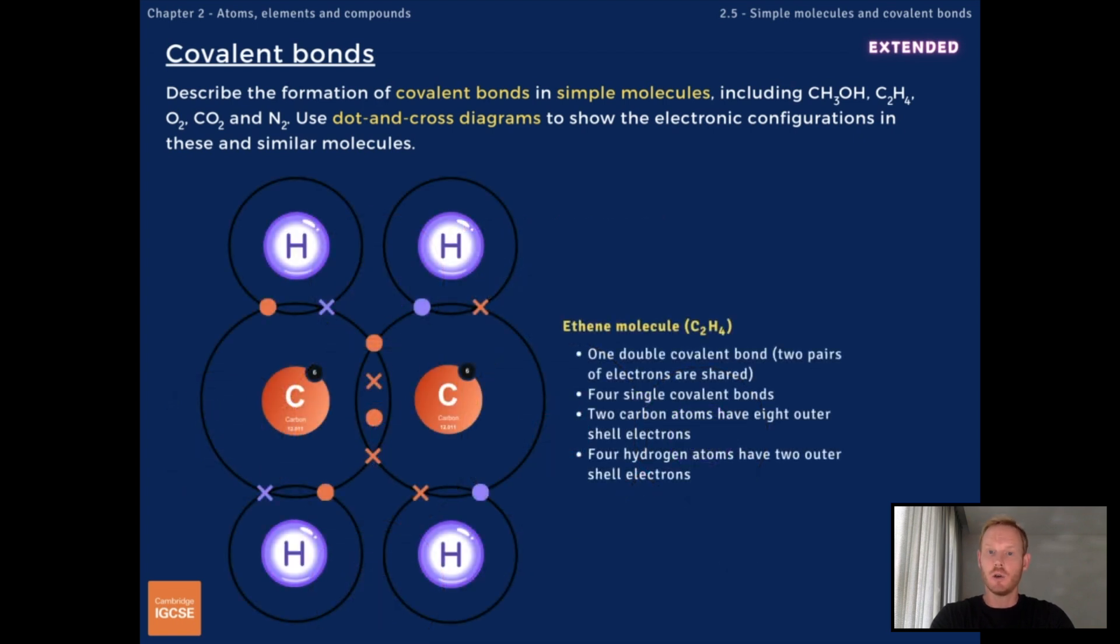Ethene is made of two carbon and four hydrogen atoms. Each carbon atom forms a single bond with two hydrogen atoms, bringing the number of outer shell electrons up to six. To achieve a full outer shell, each carbon atom shares two pairs of electrons with the other, forming a double covalent bond.